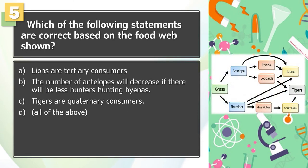Number 5: Which of the following statements are correct based on the food web shown? A. Lions are tertiary consumers, B. The number of antelopes will decrease if there will be less hunters hunting hyenas, C. Tigers are quaternary consumers, D. All of the above.